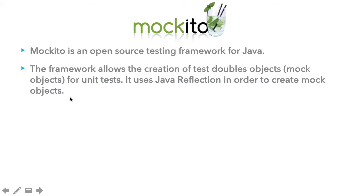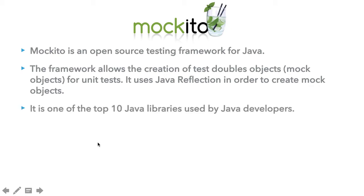In our earlier lecture, we saw that we created the test double objects manually. Now the Mockito framework creates these test double objects for us by simply using Java reflection. This framework has gained popularity over the years and is considered one of the top 10 Java libraries used by Java developers.